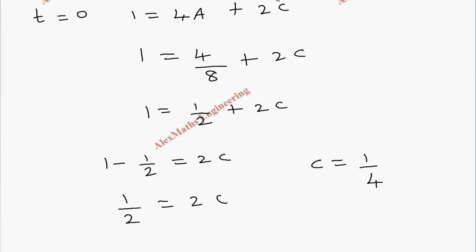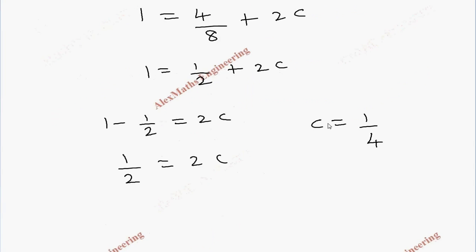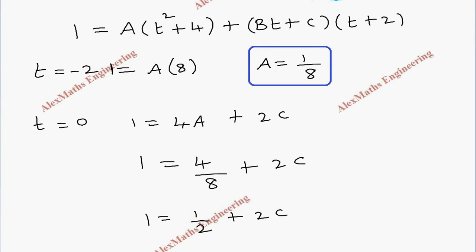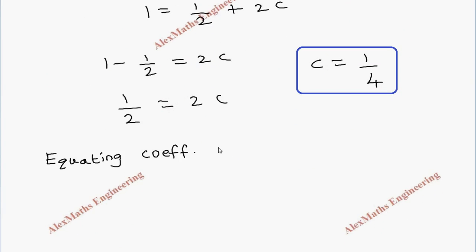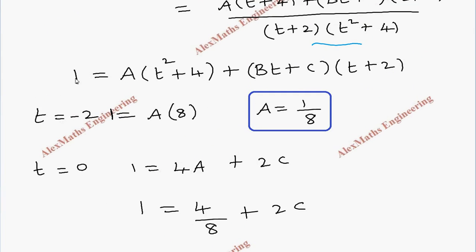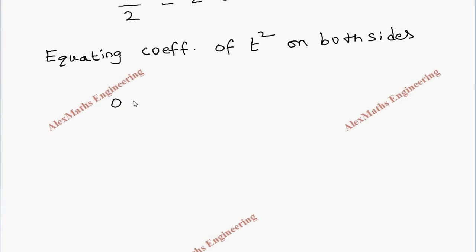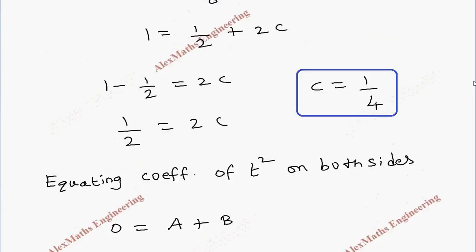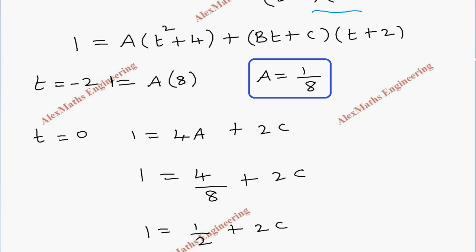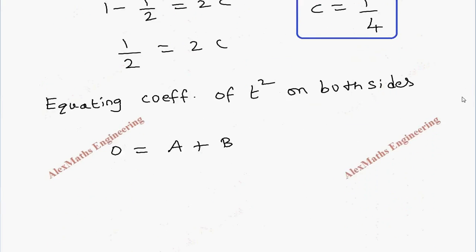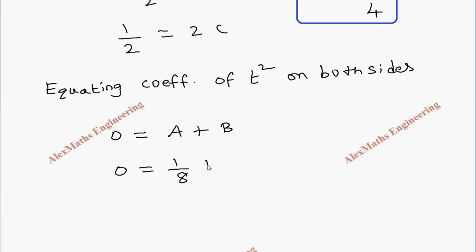So far we have found A and C. For finding B, we cannot make any term zero with another substitution, so let us compare the coefficient of t squared on both sides. On the left side there is no t squared. On the right side, the t squared coefficient is A plus B. So 0 equals A plus B. Substituting A equals 1 by 8, we get B equals minus 1 by 8.